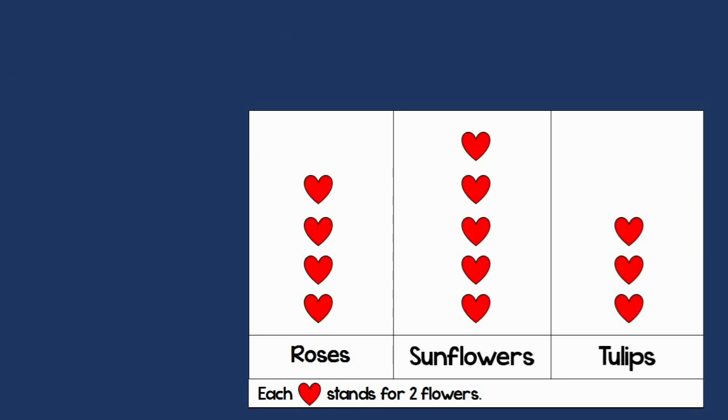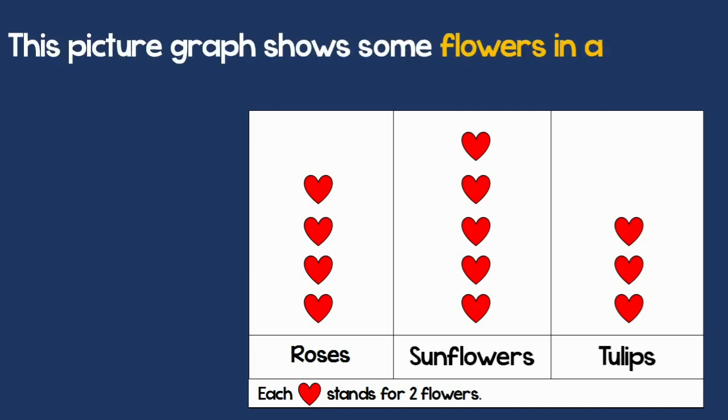Now let's see what happens if the key is not one. This picture graph shows some flowers in a garden. There are some roses, some sunflowers, and tulips. Now look at the key. The key says that each mark stands not for one, but two flowers.